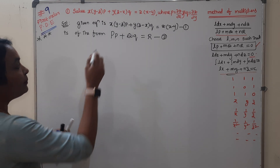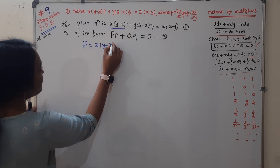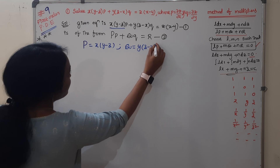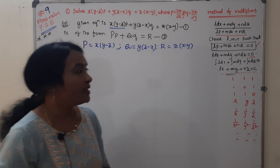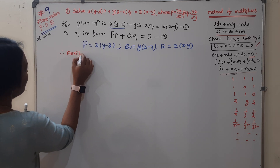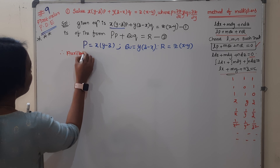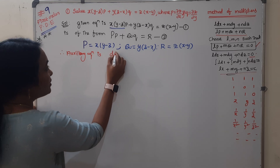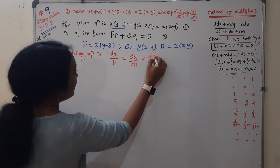What is the Lagrange's linear equation? Here, the capital P value is the coefficient of small p: x(y − z). Capital Q is the coefficient of q: y(z − x). And R is z(x − y). Therefore, the auxiliary equation in Lagrange's is: dx/P = dy/Q = dz/R.